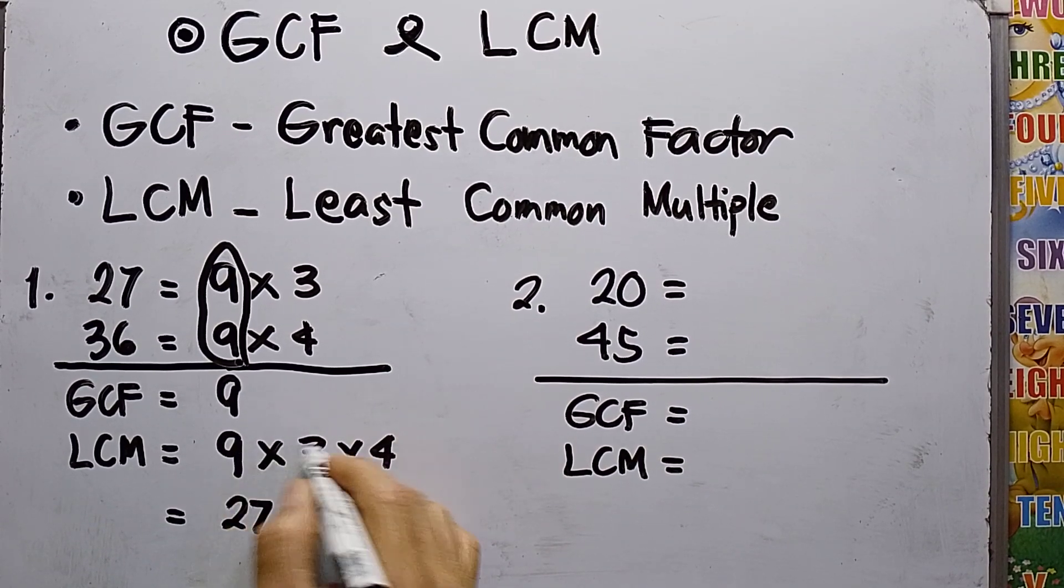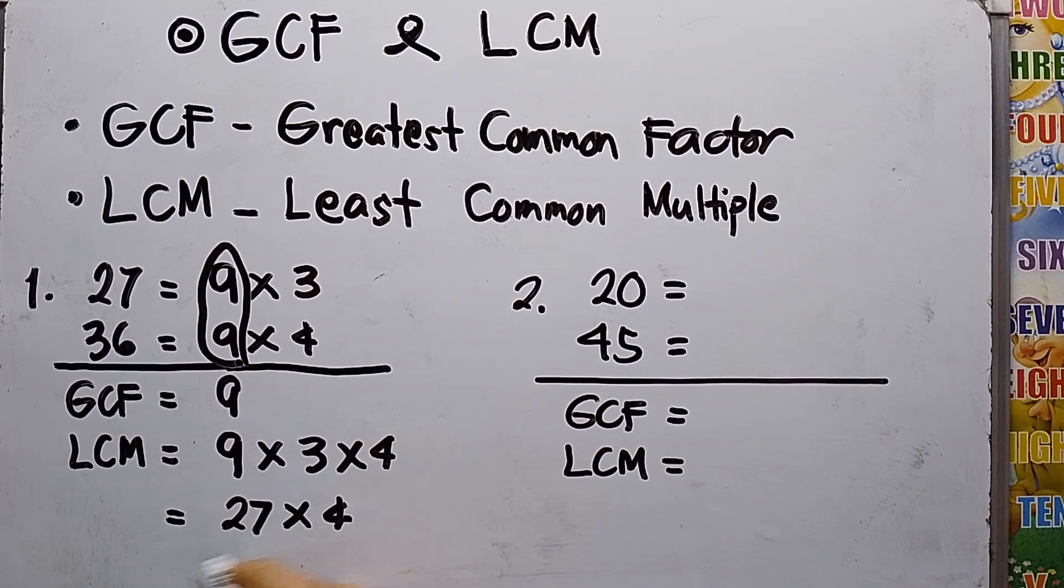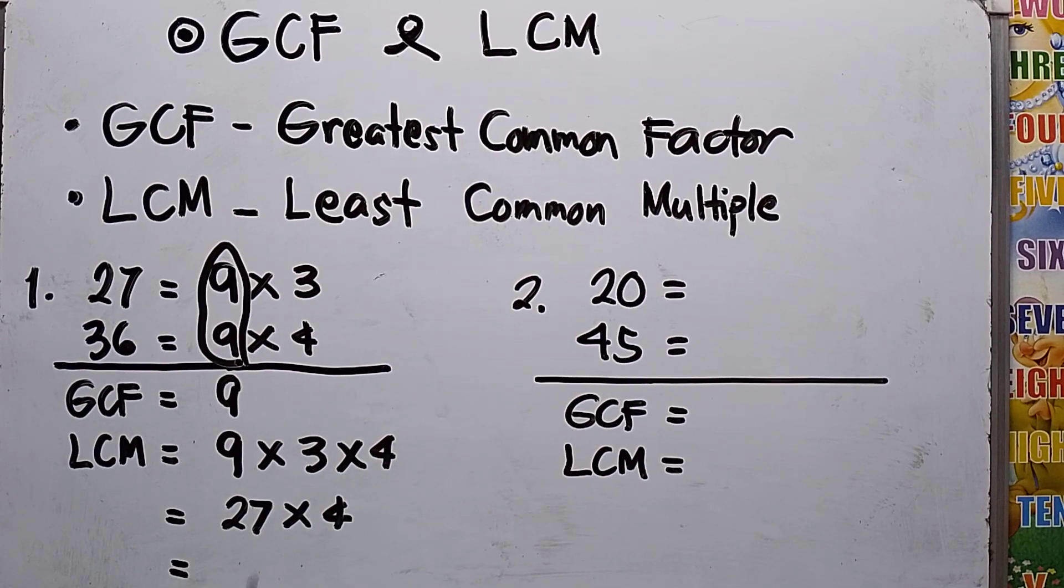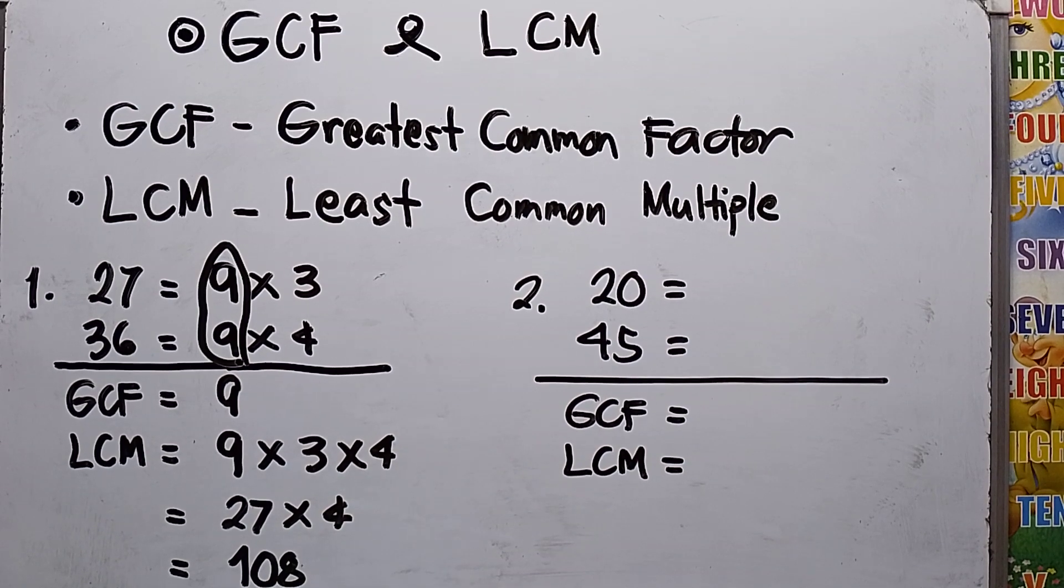27 times 4 is 108. By the way, this math is intended for grades 4 and 5.